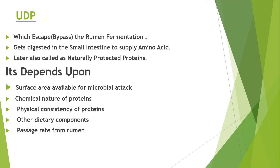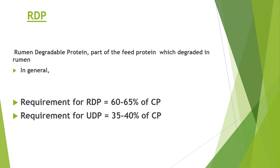Undegradable proteins, which escape and bypass the rumen fermentation, get digested in the small intestine to supply amino acids — later also called Naturally Protected Proteins. Factors affecting it include surface area available for microbial attack, chemical nature of proteins, physical consistency of proteins, other dietary components, and passage rate from rumen. Rumen degradable protein requirements are 60-65% of crude protein, while undegradable protein requirements are 35-40% of crude protein.